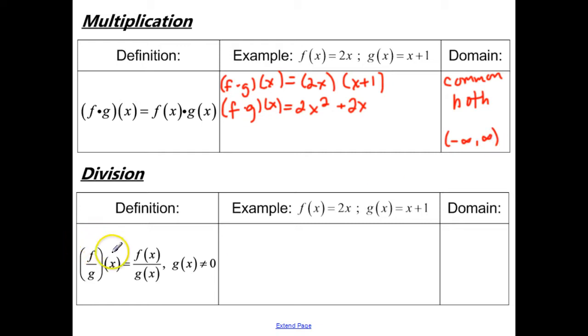Now for division, it's the same idea. f divided by g of x is f of x divided by g of x. But the restriction on the domain this time, it is what's common in both, except g of x, whatever's on the bottom, cannot be equal to 0. So when we divide this, and we take 2x divided by x plus 1, we can't simplify this any further, but when we talk about the domain, we said it's what's common in both.